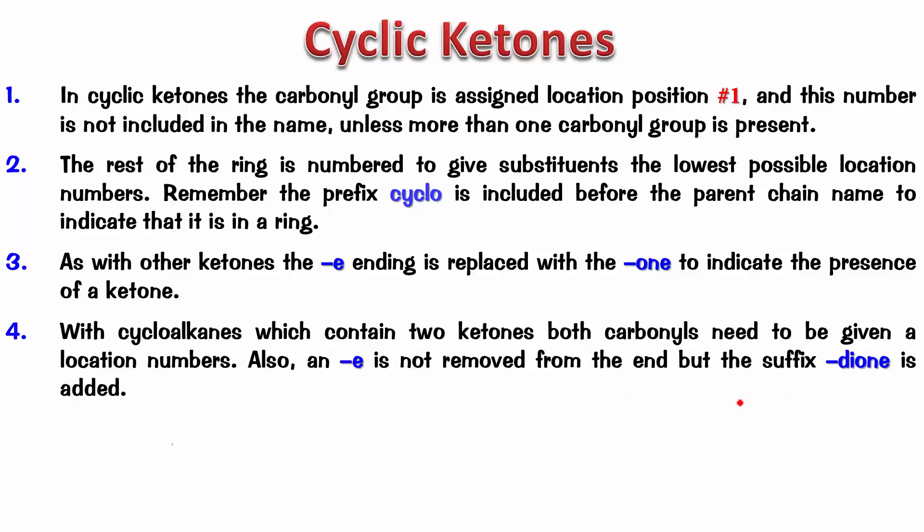Let's see some examples — pause the video, name it, and play it back. As you can see, it's a five-membered ring: cyclopentane. We have a double bond O and no other substituents, so no numbering is needed. It's cyclopentanone.